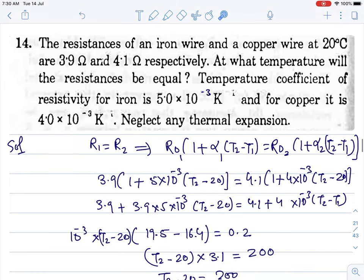Question number 14. Resistance of iron wire is at this much, and copper is this much. At what temperature will the resistance be equal? Alpha 1 and alpha 2 are given.